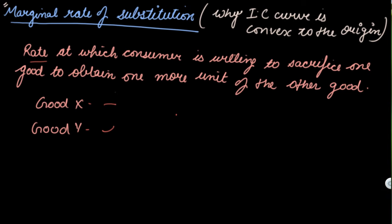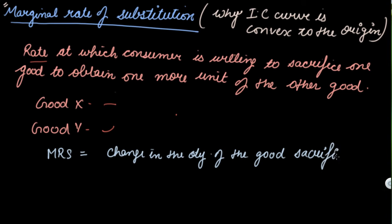The MRS is calculated by the change in the quantity of the good sacrificed. Here, good Y is sacrificed and good X is obtained. You are obtaining good X and you are sacrificing good Y.